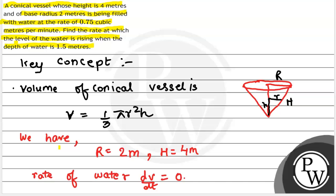The rate of water is dV/dt, which is given as 0.75 meter cube per minute.